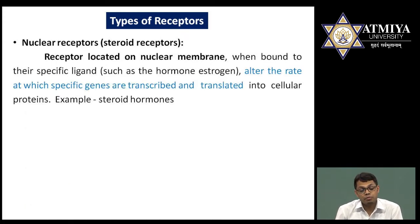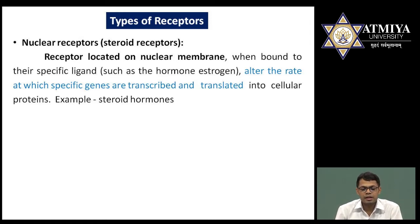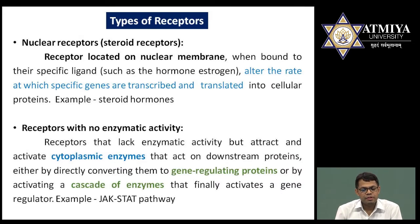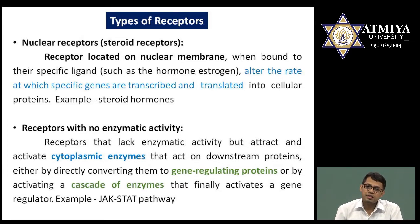The fourth type is nuclear receptors, also known as steroid receptors because steroids can cross membranes and bind to them. Famous examples are different types of steroids. These receptors are present either on the nuclear membrane or in the cytoplasm.